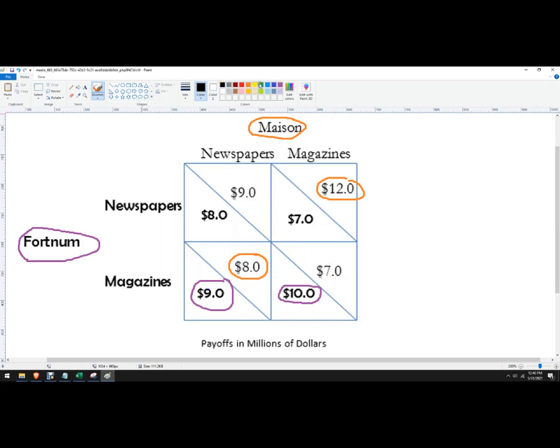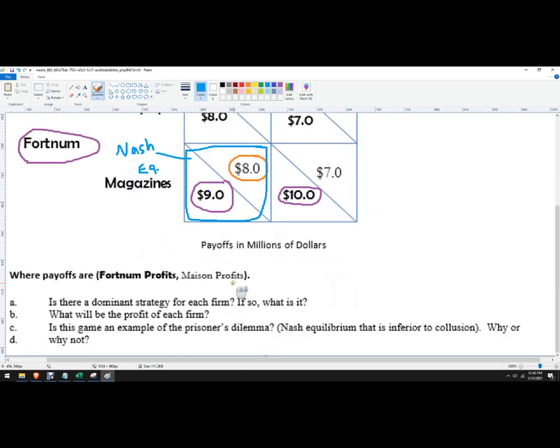So now we've actually solved the game. This is what's known as the Nash equilibrium. This is the most likely outcome of the game when both parties are acting in their own best interest. Mason's gonna advertise in newspapers and Fortnum is gonna advertise in magazines.